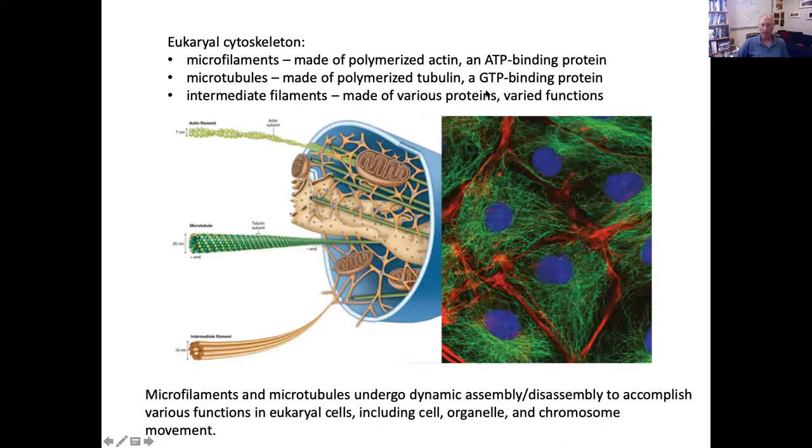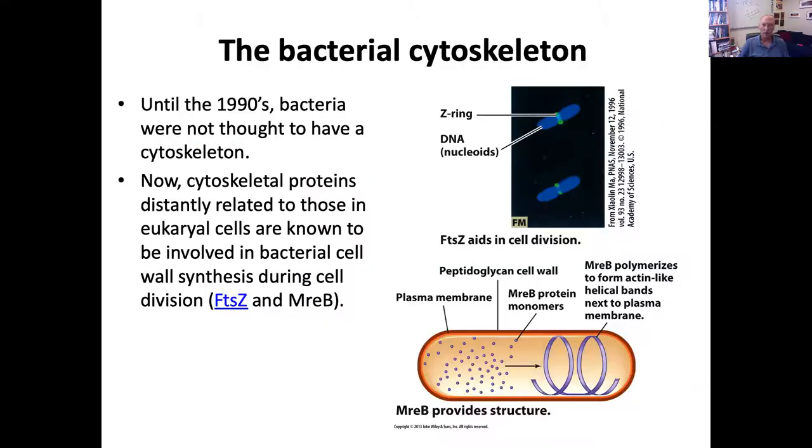Now, the ATP-binding and GTP-binding is important because that process of binding the nucleotides and hydrolyzing them controls the dynamic assembly and disassembly of these polymers, these filaments. And that, in turn, is used for things like moving chromosomes around during mitosis or moving organelles around and organizing the cell, moving the cell itself through the process of extending pseudopods, for example. So these are dynamic structures. They're not just a static framework.